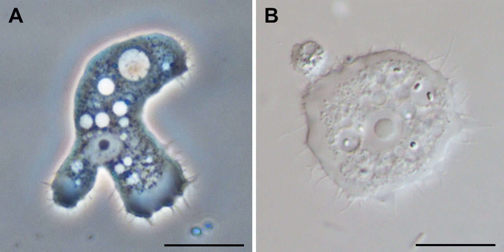Discosia is a class of Amoebozoa, consisting of naked amoebae with a flattened, discoid body shape. Members of the group do not produce tubular or subcylindrical pseudopodia, like amoebae of the class Tubulinia.